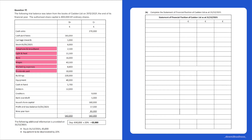Part B of question 17 requires us to complete the statement of financial position from the figures we've just created and our trial balance. The statement of financial position is the last step in preparing final accounts and it records a business's assets, liabilities, and capital. We'll begin by adding in our headings, the first of which is Fixed Assets.